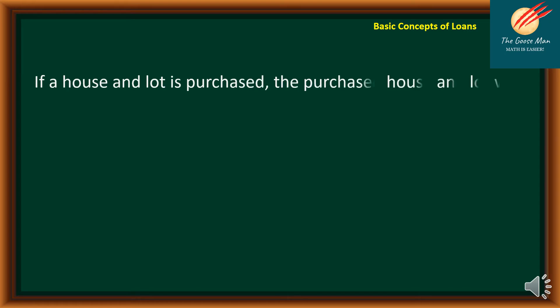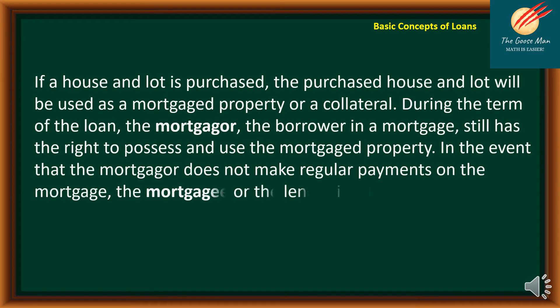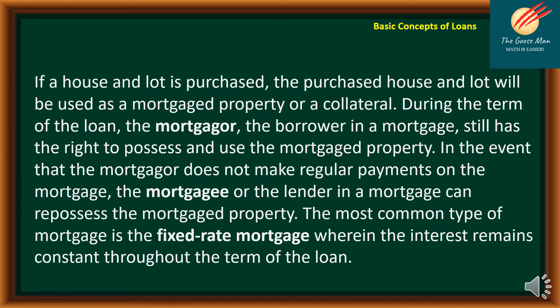If a house and lot is purchased, the purchased house and lot will be used as a mortgage property or collateral. During the term of the loan, the mortgagor or borrower still has the right to possess and use the mortgage property. In the event the mortgagor does not make regular payments, the mortgagee or lender can repossess the property. The most common type is the fixed-rate mortgage, wherein the interest remains constant throughout the term of the loan.